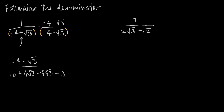Then positive root 3 times negative root 3 is going to give us negative 3, because square root of 3 times square root of 3 is just 3, and we have this negative sign. Now here's what we were talking about with the canceling: we have a positive 4 root 3 and a negative 4 root 3 — when we add those together, we get them to cancel. The net of these two is just 0, so what we're left with is negative 4 minus root 3 in the numerator, and 16 minus 3, or just 13, in the denominator.